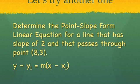A second problem would be for you to determine the point-slope form of a line, equation for a line that has a slope of 2 and that passes through the point 8, 3.